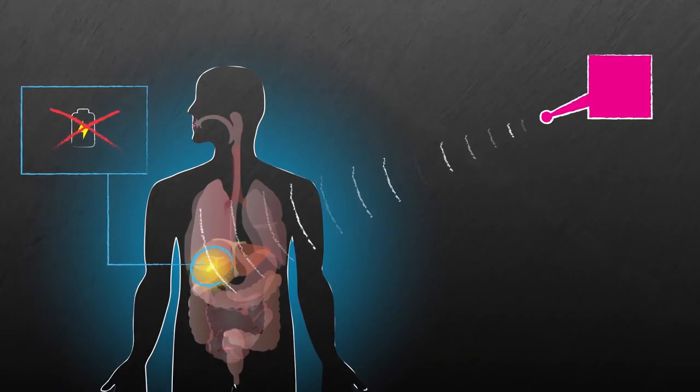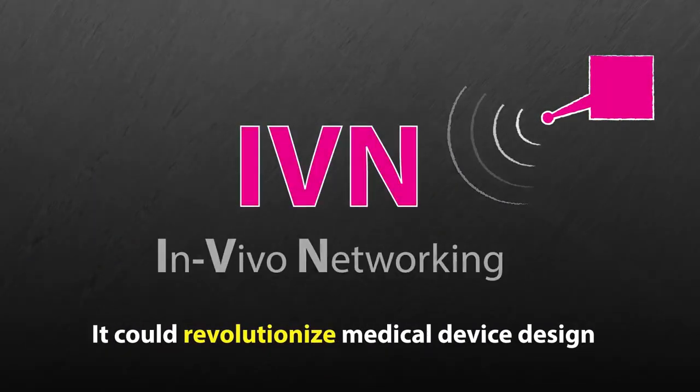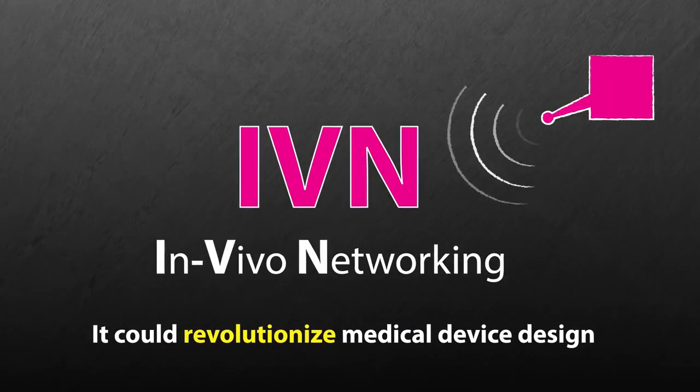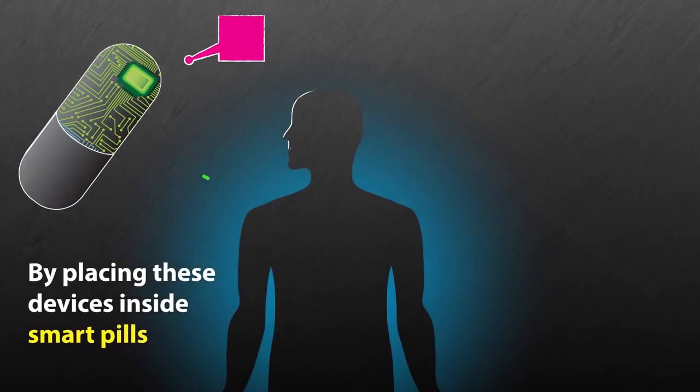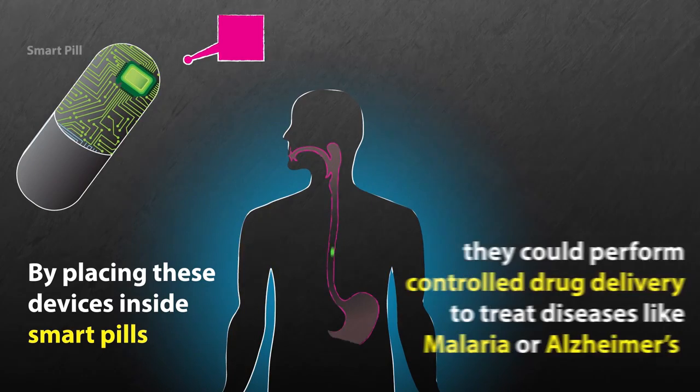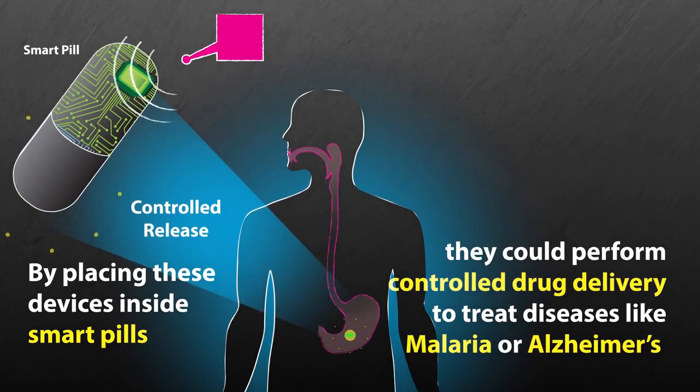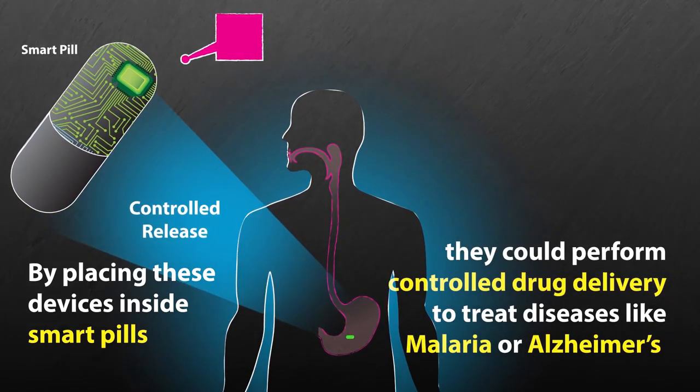The researchers envision that the technology, called IVN, could revolutionize medical device design. For example, by placing these devices inside smart pills, they could perform controlled drug delivery inside the stomach to treat diseases like malaria or Alzheimer's.